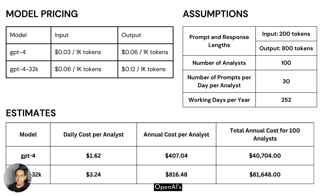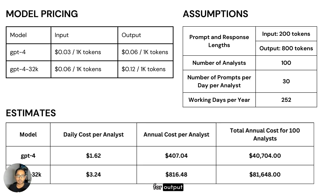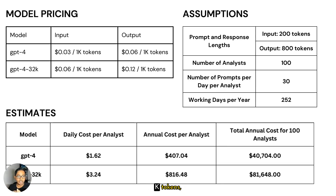From OpenAI's website, we have this pricing: for 1,000 input tokens they charge 3 cents, and for output of 1,000 tokens they charge 6 cents. Similarly, for the model with 32K tokens, these are the model pricings that I got from OpenAI's website.